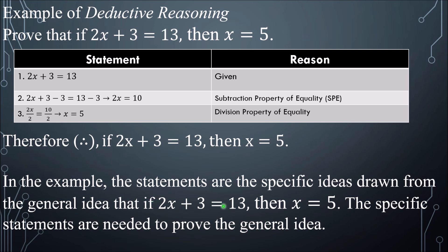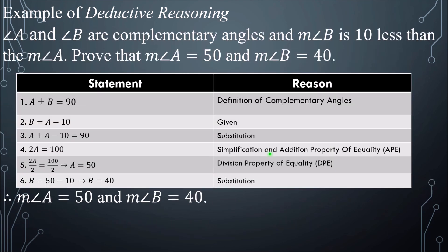Let's have another example. Angle A and angle B are complementary angles. The measure of angle B is 10 less than the measure of angle A. Prove that the measure of angle A is equal to 50 and the measure of angle B is equal to 40.